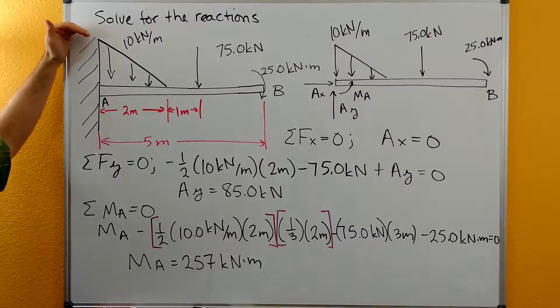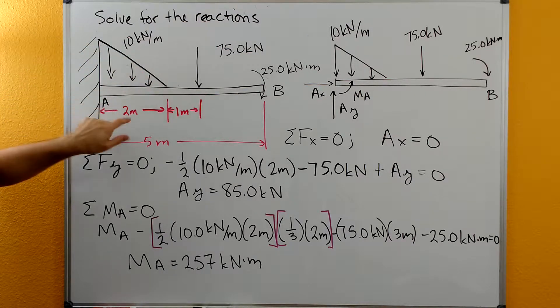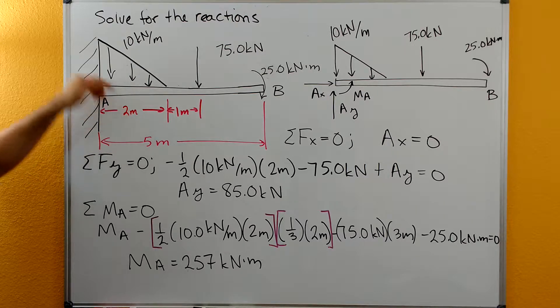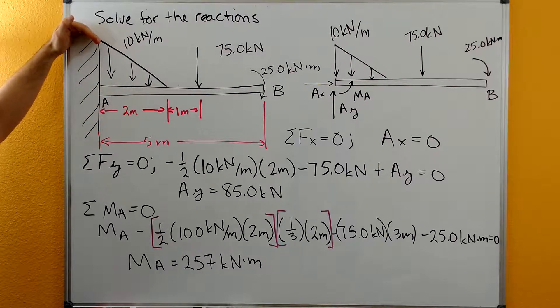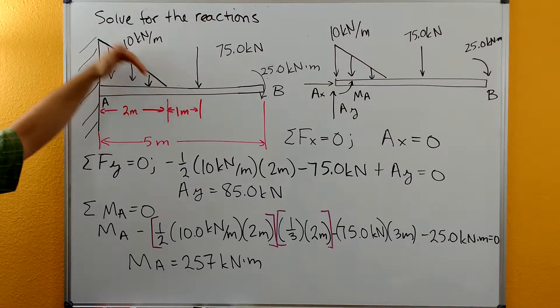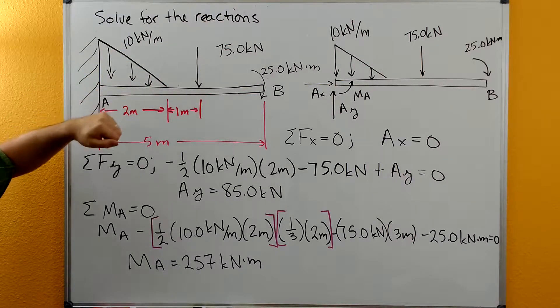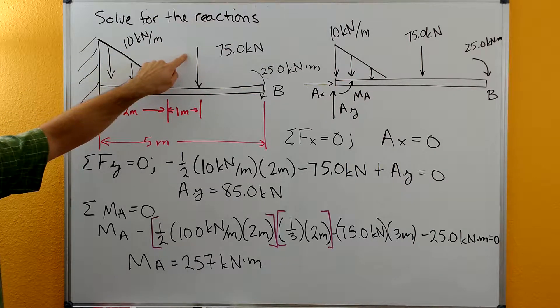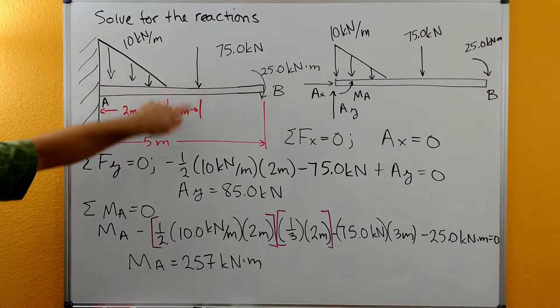We have a 10 kilonewton per meter distributed load that acts over 2 meters. Distributed load is 10 kilonewtons per meter here, but it's triangular so it goes down to zero here.